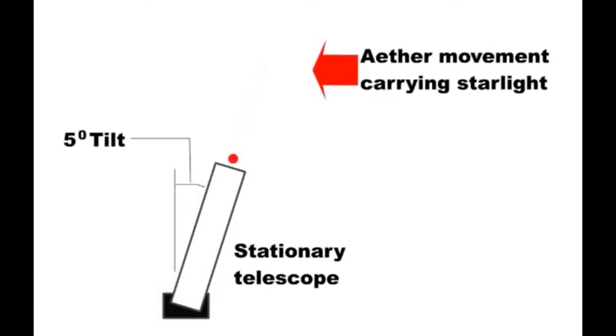But if the starlight is going past the telescope at 5 mile an hour, then when it is filled with water, no further tipping is needed because the light is coming in at 5 degrees anyway. The starlight stays on the same path, but is only travelling slower in the water.